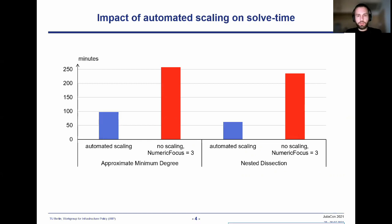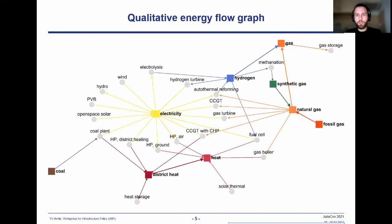In the remainder of the presentation, I will briefly present the plotting tools mentioned earlier. In more sophisticated applications, we have many different energy carriers and technologies covered in our energy system models, which are represented in the qualitative energy flow graph shown here. This was created using PyCall and Python plotting libraries.